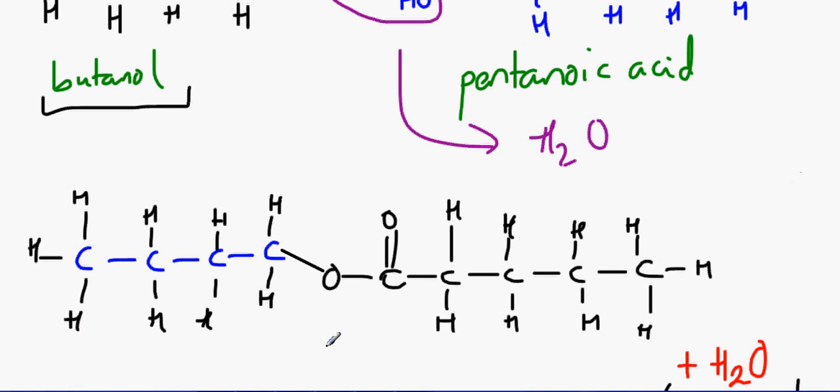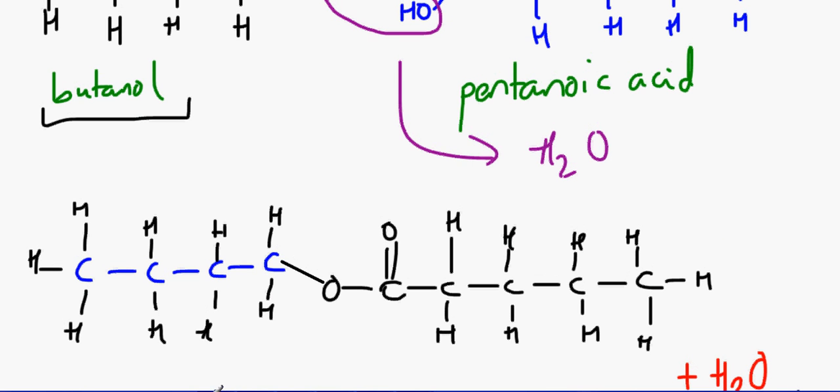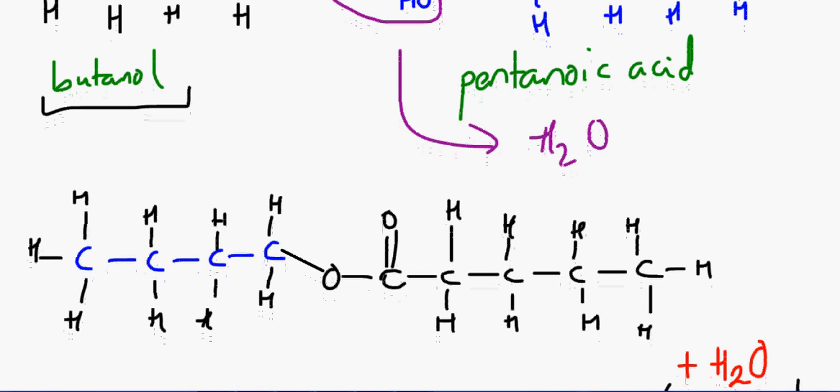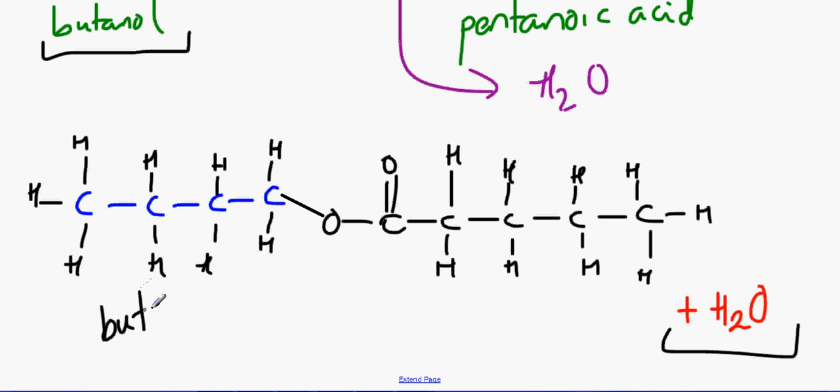We have the oxygen from the alcohol here connected to the rest of the carboxylic acid. When the carboxylic acid has lost the OH and the alcohol has lost the H to make water, the way we would name this we would name it butyl pentanoate.